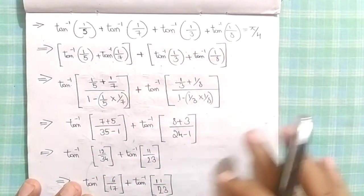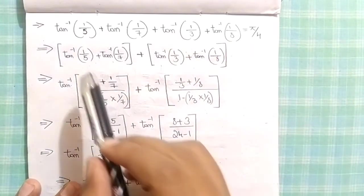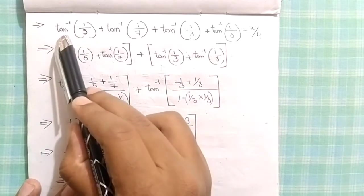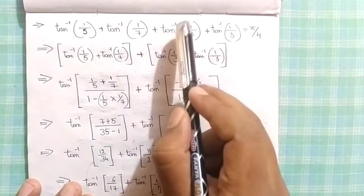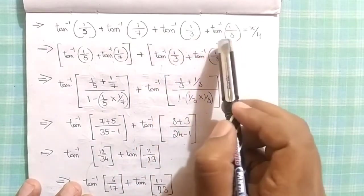My question is here: tan inverse of 1/5 plus tan inverse of 1/7 plus tan inverse of 1/3 plus tan inverse of 1/8 is equal to π/4.